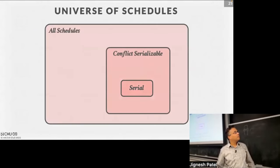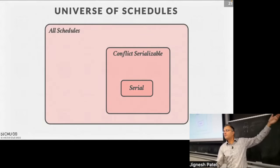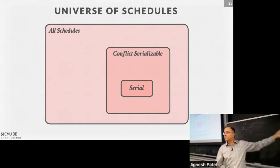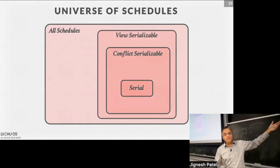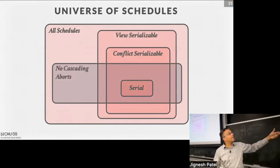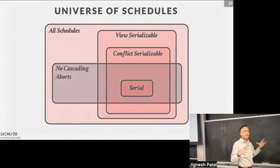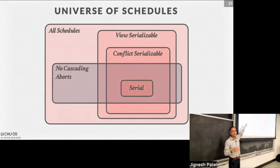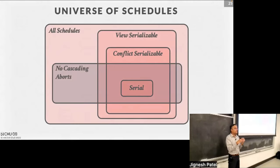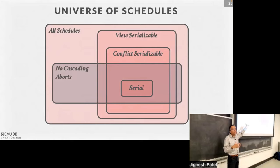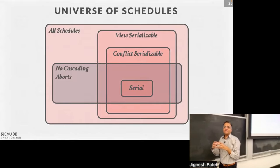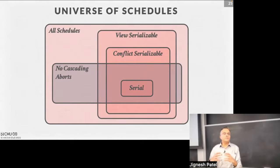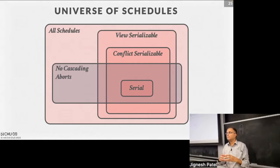Going back to the serial schedule diagram: a bigger subset of that we allow for efficiency. View serializable is theoretical but good to know. Cascading aborts cuts across conflict serializable — strong strict two-phase locking removes some conflict serializable schedules from consideration to make it safer and avoid cascading aborts. We've restricted that space a little bit more. A serial schedule is not going to have cascading aborts. When we do strict two-phase locking, we have a little less parallelism but we avoid cascading aborts.